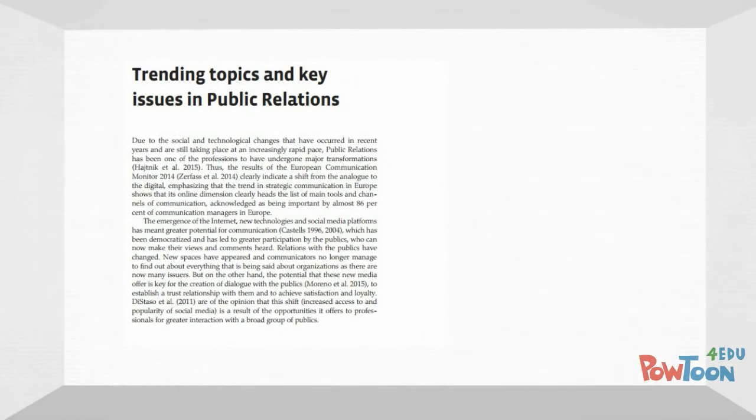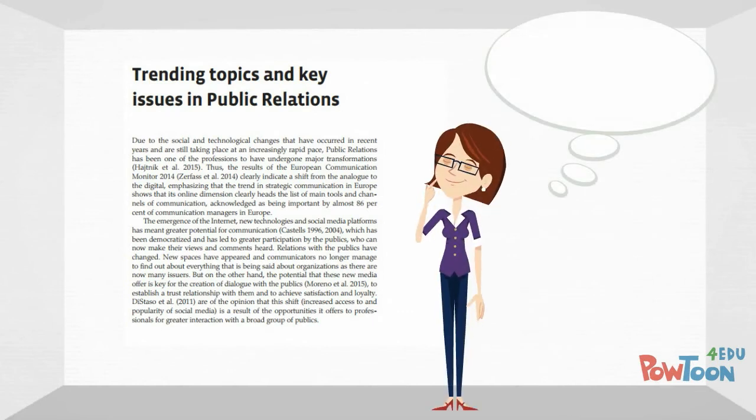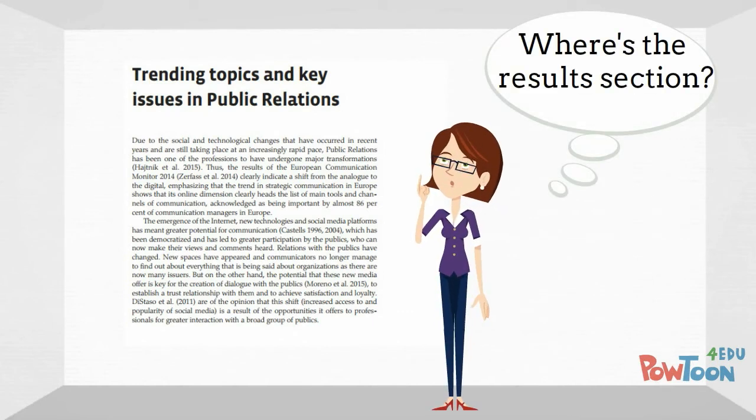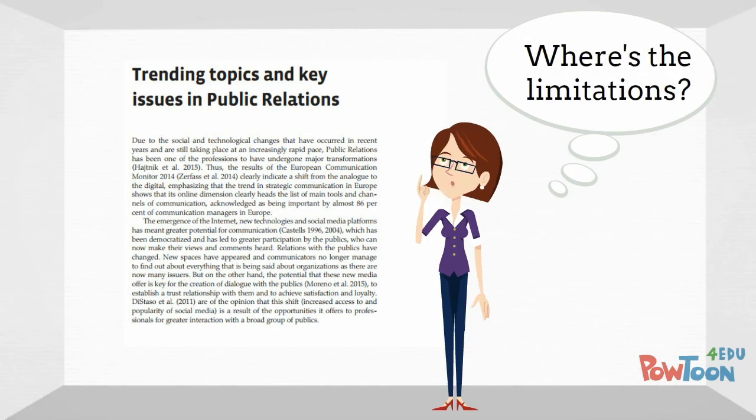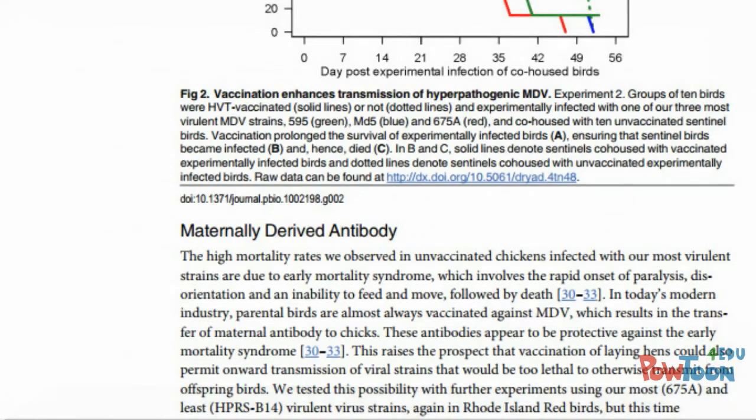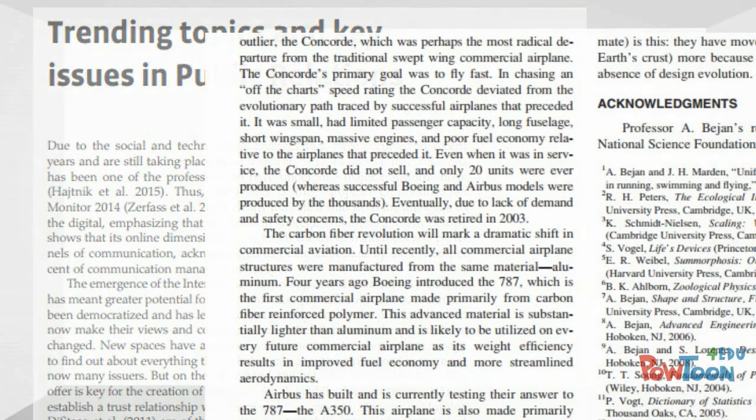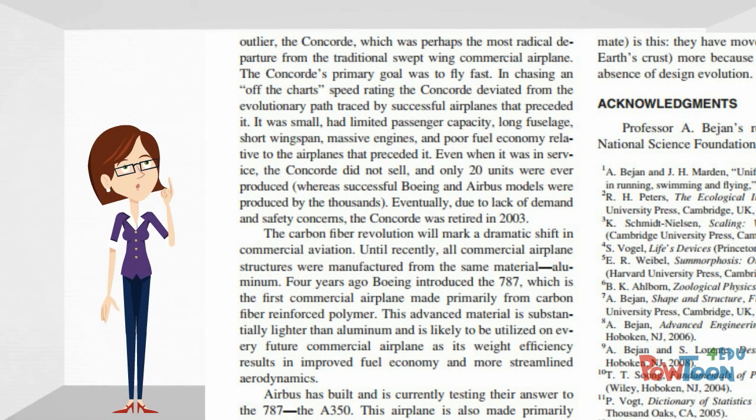Not all scholarly articles will follow the exact same format described in this tutorial. However, even in articles that do not, there are often clues you can use to find the most relevant information. Look for the headings of the different sections, or skim the first few paragraphs and the last few paragraphs to get an idea of the purpose of the article.